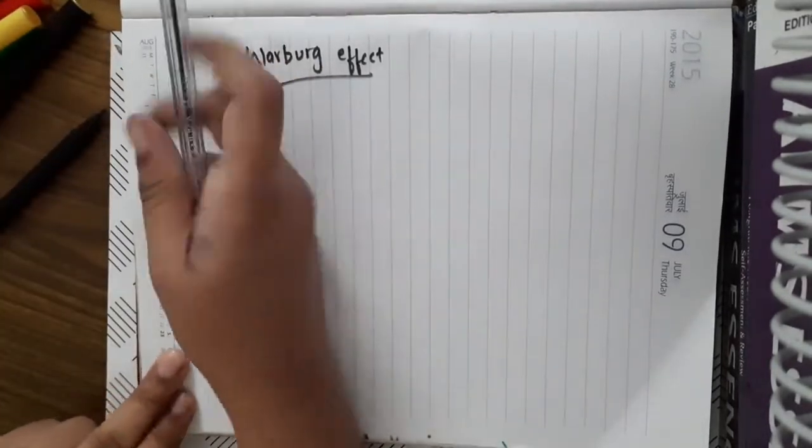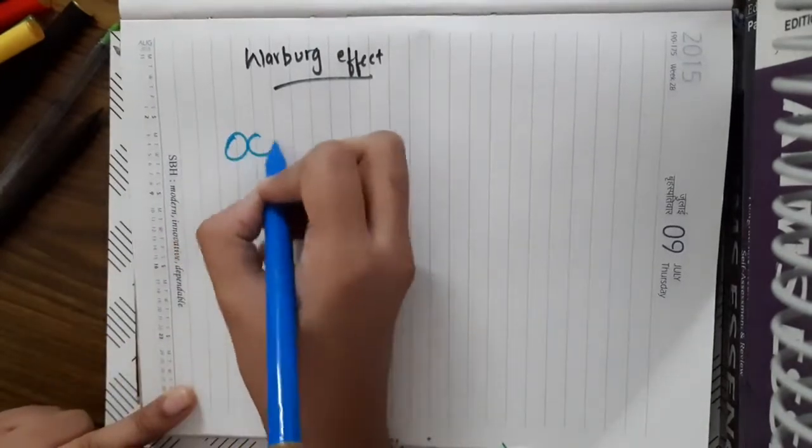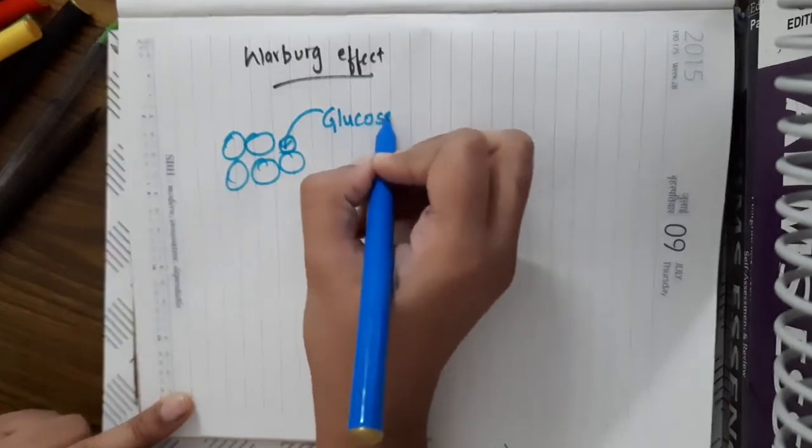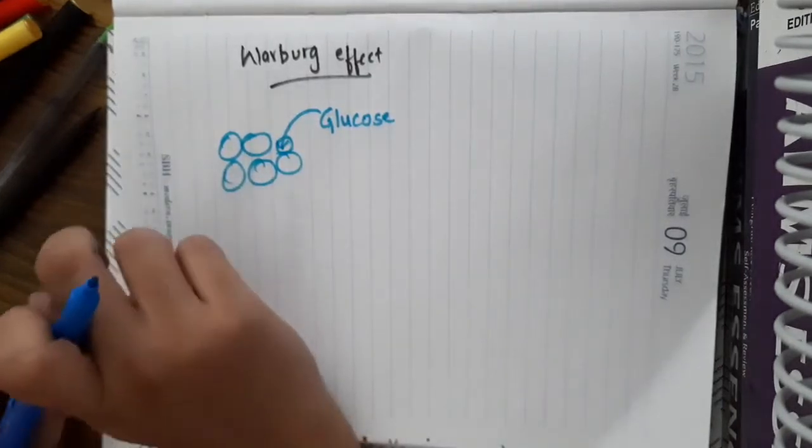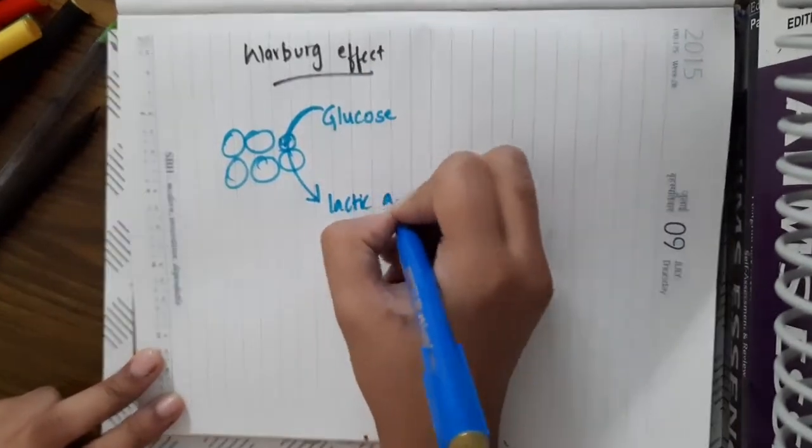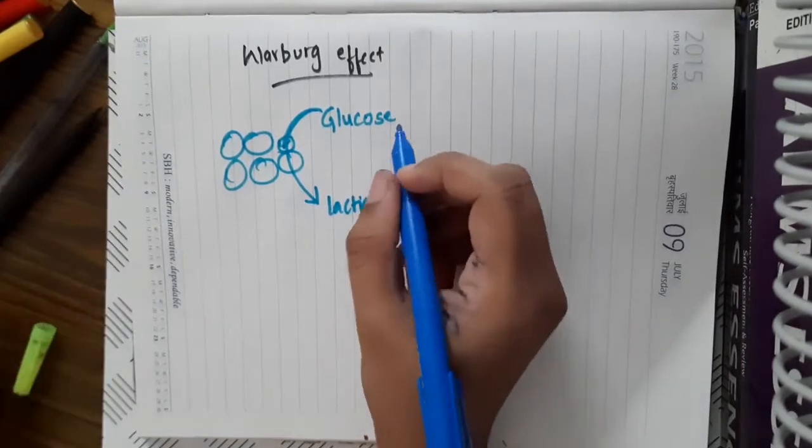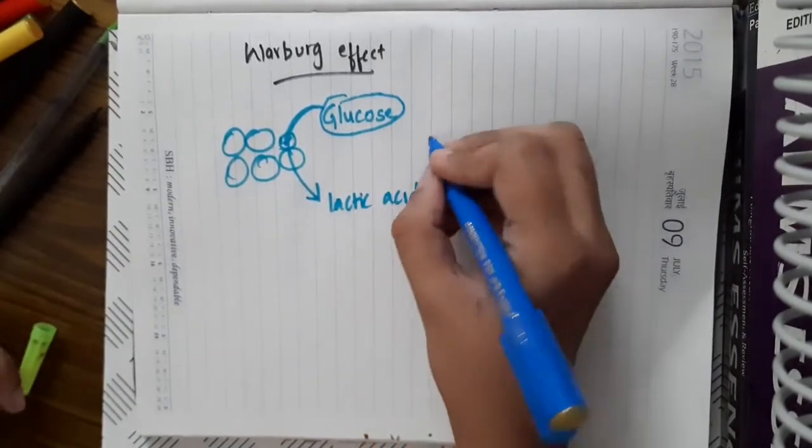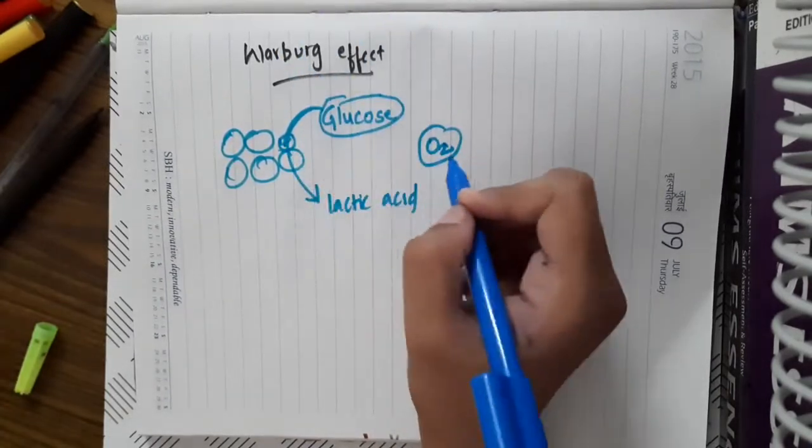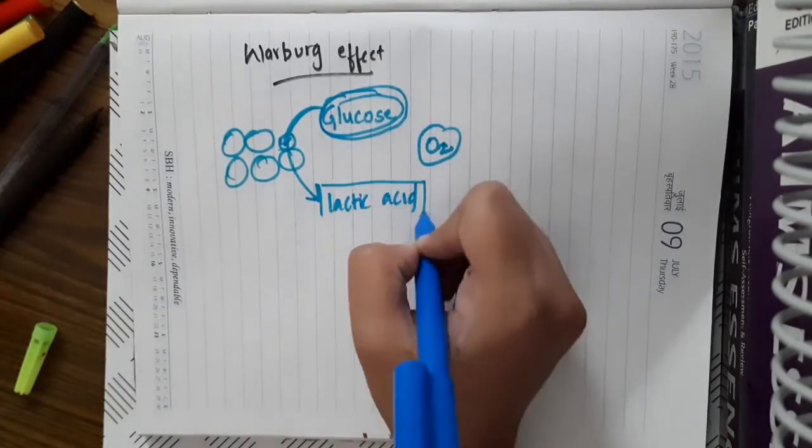Here, cancer cells in the body require glucose for their metabolism. The cancer cells produce large amounts of glucose and metabolize it to lactic acid. This glucose, even in the presence of oxygen, the cancer cells will metabolize the glucose to lactic acid.